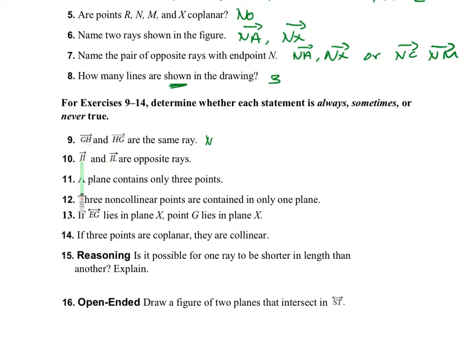Are ray JI and ray JL opposite rays? This one is sometimes. Why? Because they share the same endpoint J, but I and L don't necessarily form a line with J. For example, I could have J in the middle with I and L going in different directions — not opposite rays. But if I and J and L are collinear, then they are opposite rays.